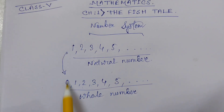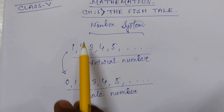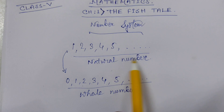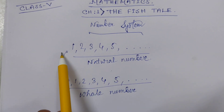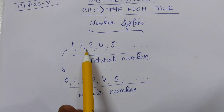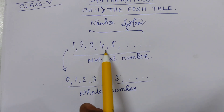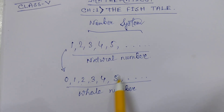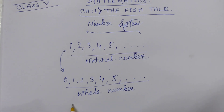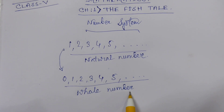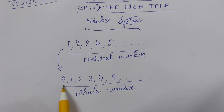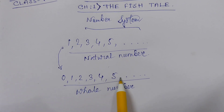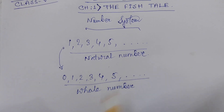Everyone follow this very carefully. The set of natural numbers starts from 1: 1, 2, 3, 4, 5, 6... up to infinite. But the set of whole numbers starts from 0: 0, 1, 2, 3, 4, 5, 6... up to infinite.